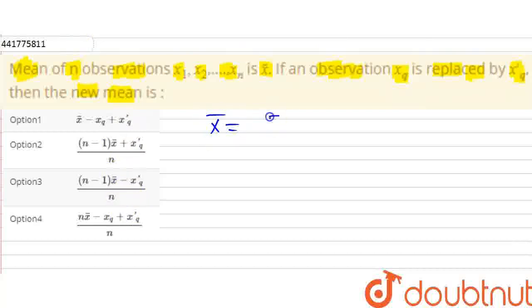Mean is summation xi divided by n. Summation xi is the sum of all observations and total number of observations is n.